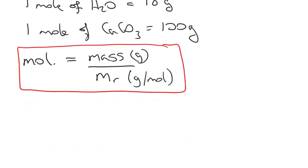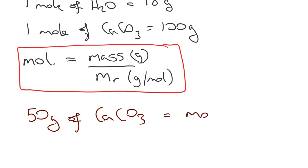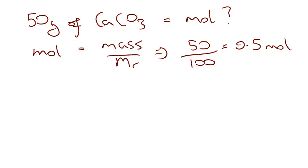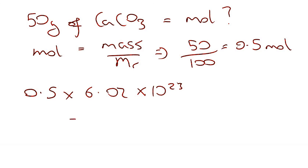We can look at this another way. If I had 50 grams of calcium carbonate, how many moles would I have? Moles equals mass over MR. Therefore, I have 50 divided by 100 — since the MR is 100 — which equals 0.5 moles of calcium carbonate. If I really wanted to, I could then work out how many particles of calcium carbonate I have: 0.5 times 6.02 times 10 to the 23, which is 3.01 times 10 to the 23 particles. But we're usually not worried about that — we just deal with working out the number of moles of a substance.